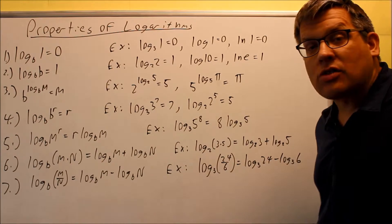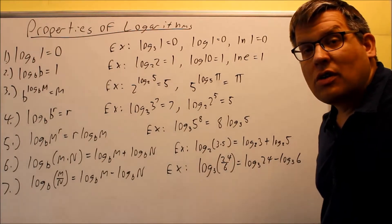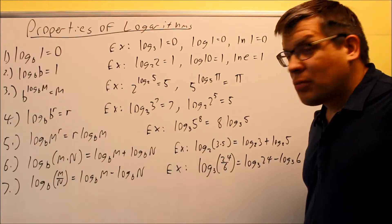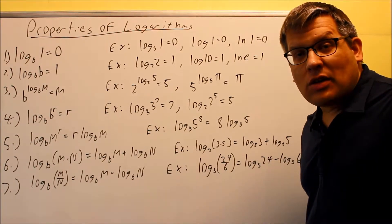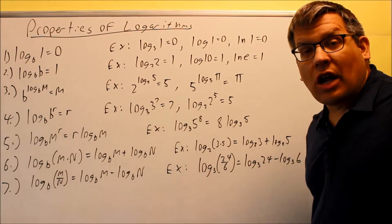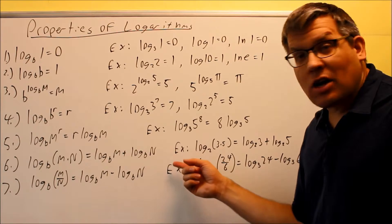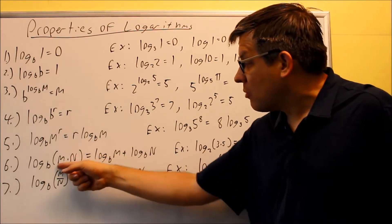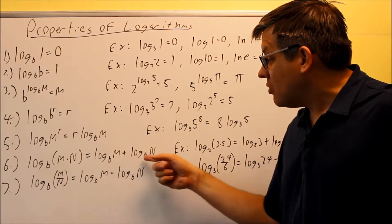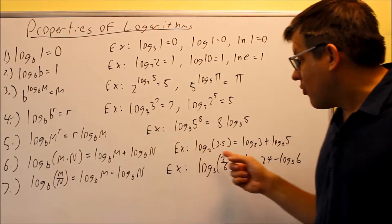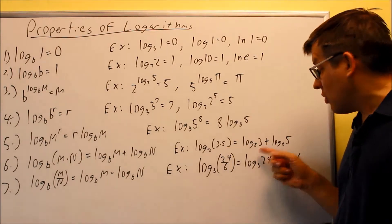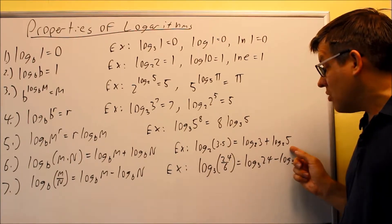We talked before about properties of exponents. If you're multiplying two things with the same base, you add the exponents. Logs are actually a type of exponent, so that's why these properties hold true. Anytime you have two numbers multiplied inside the log, we can split them up into two separate logs. For instance, log base 2 of (3×5) equals log base 2 of 3 plus log base 2 of 5.